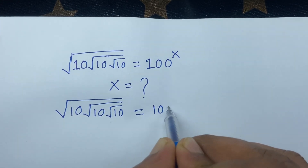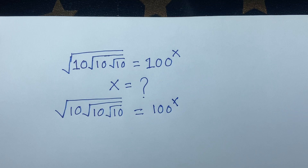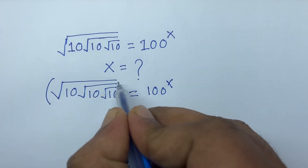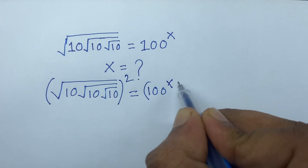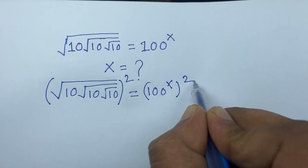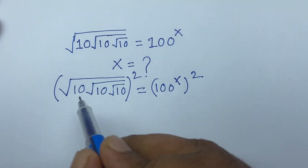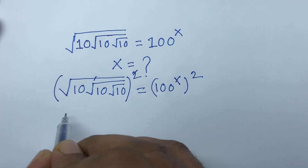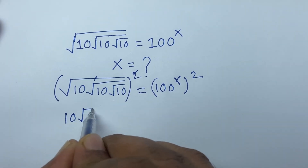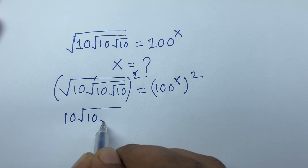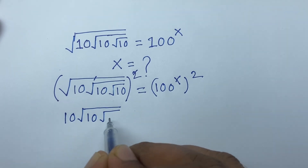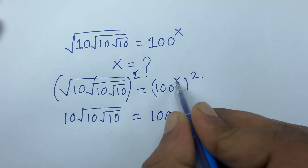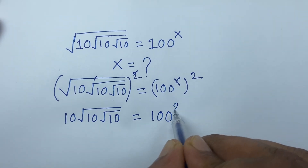So our question is equal to 100 to the power x. I use both sides whole square, so the square root cancels and we find out: 10 times square root of 10 times square root of 10 is equal to 100 to the power 2x.